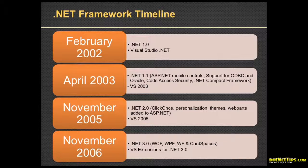November 2006 brought .NET 3. To me, .NET 3 wasn't really .NET 3 — it was more like .NET 2.1. They went up a whole version number because all it really included were the things that Vista needed: WCF for communications, WPF for presentation, and WF for workflow.